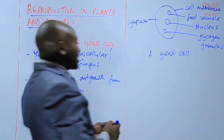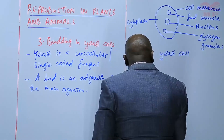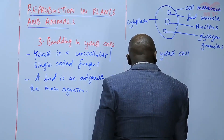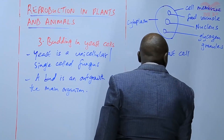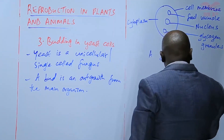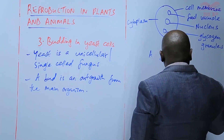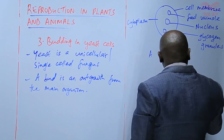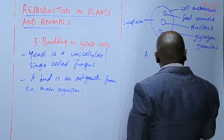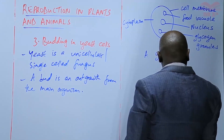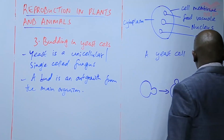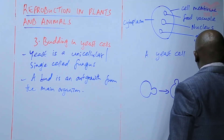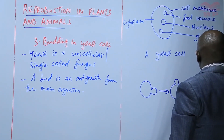To illustrate: one yeast cell forms an outgrowth. The same yeast cell then forms another outgrowth on the upper side while the original one is still growing. It continues — the upper one is still growing, and another one forms on the lower side.